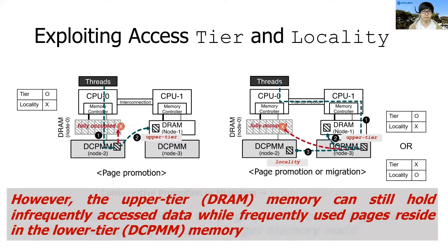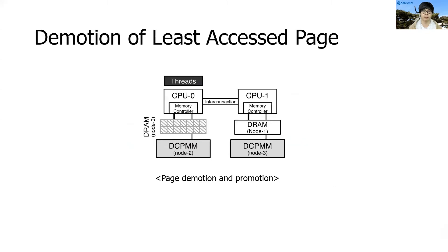Although our conservative promotion or migration can exploit the second-best option while placing pages, it does not support reclaiming pages in the local upper-tier memory. As a result, the full potential of multi-tiered memory systems cannot be exploited. This is because the upper-tier memory can hold infrequently accessed data, even though frequently accessed pages reside in the lower-tier memory. To address this remaining challenge, we introduce an aggressive approach of demoting pages to lower-tier memory, while serving the promotion or migration request to the local upper-tier memory. If the thread accesses a page in the local but lower-tier memory while the local upper-tier memory is full, then we select a victim page for eviction from the upper-tier memory.